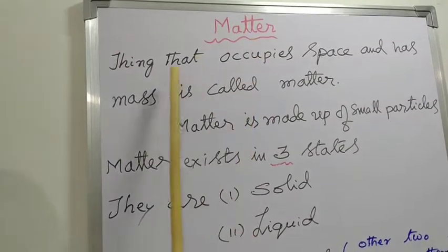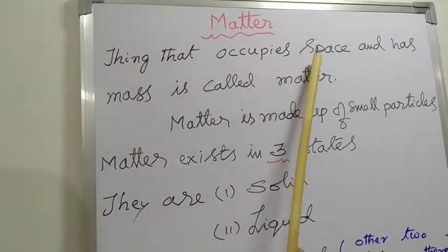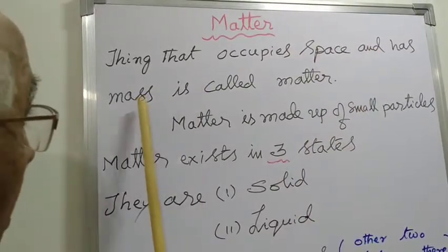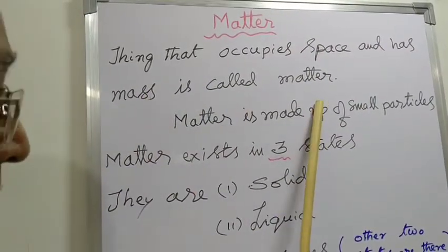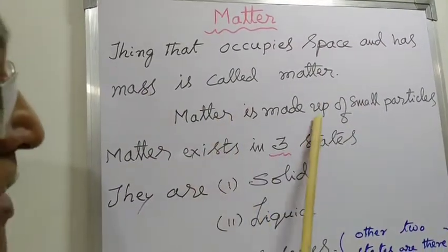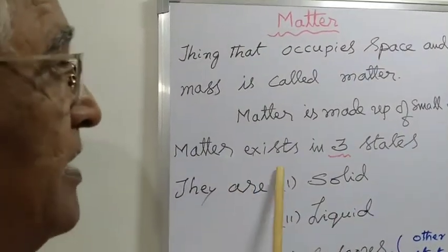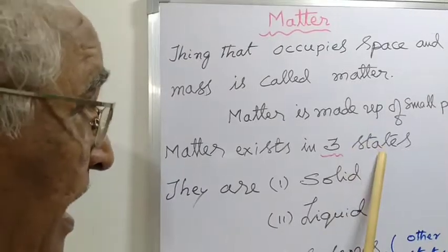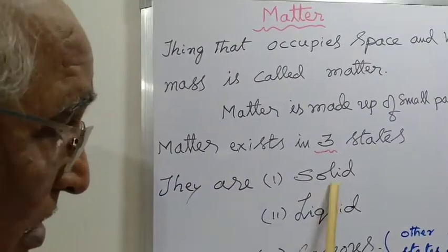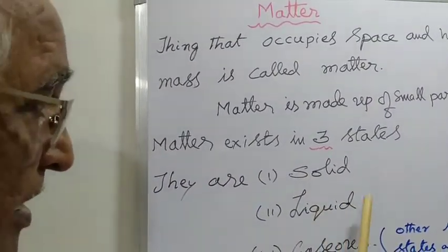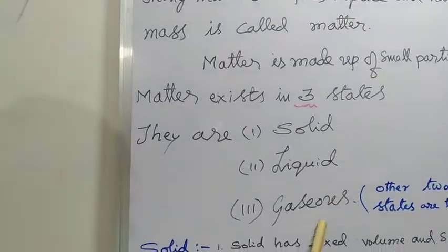Matter. Thing that occupies space and has mass is called matter. Matter is made up of small particles. Matter exists in three states. They are solid state, liquid state, and gaseous state.